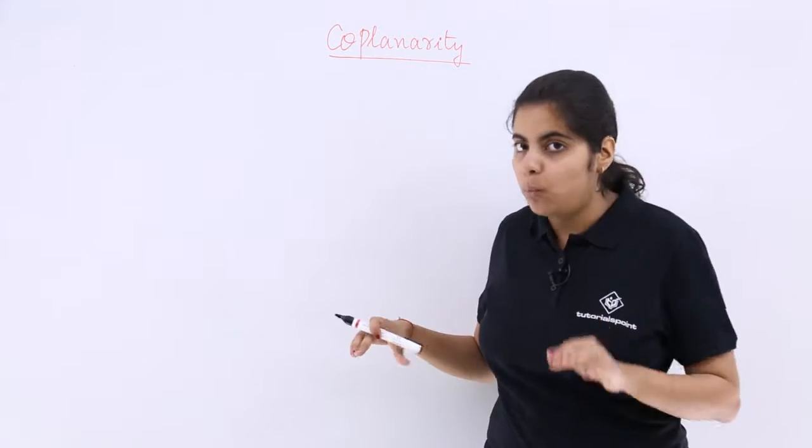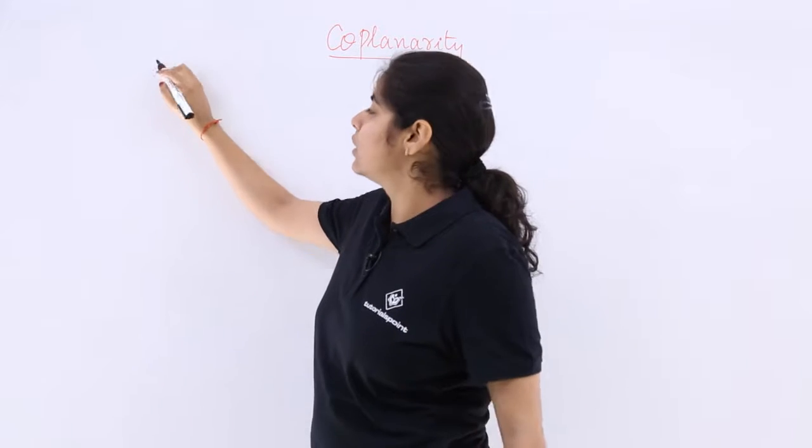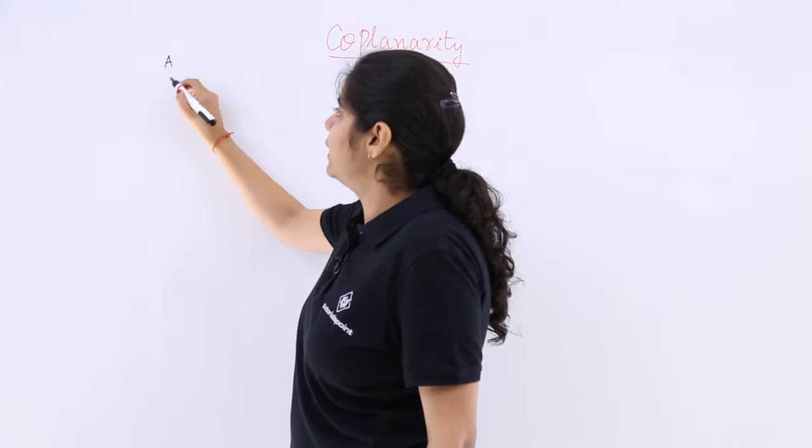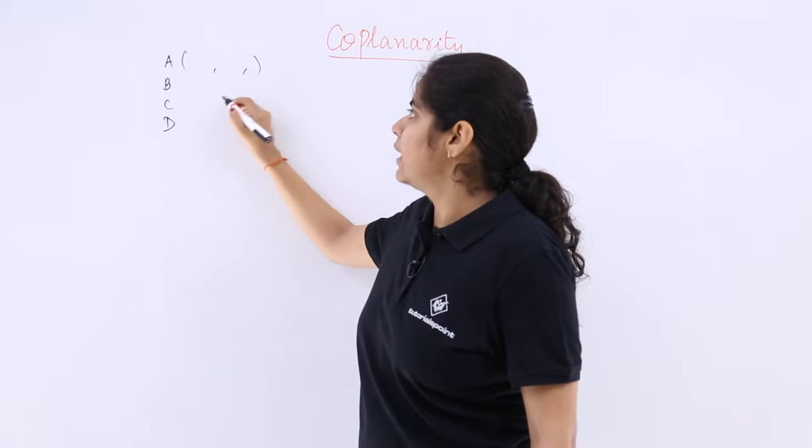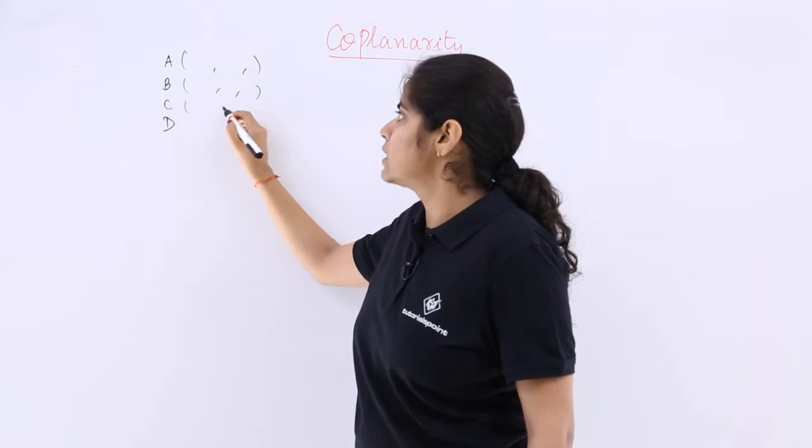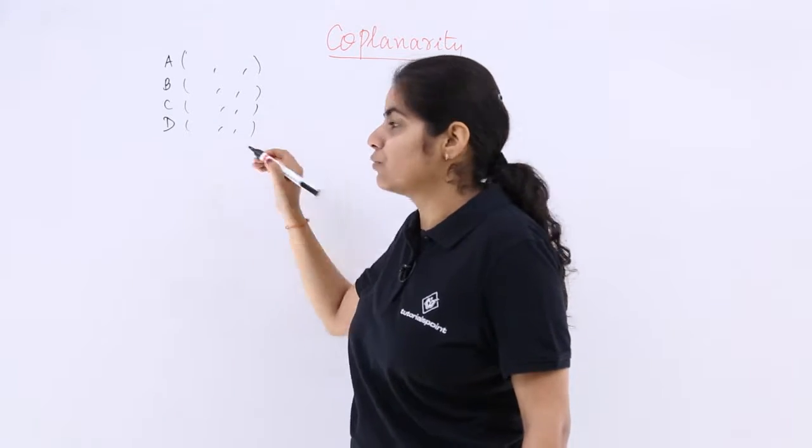So how to do it? What will the question be like and what will the algorithm be? You know what coplanarity is, so I am not getting into detail. There will be four points with different X, Y, and Z coordinates at each location.